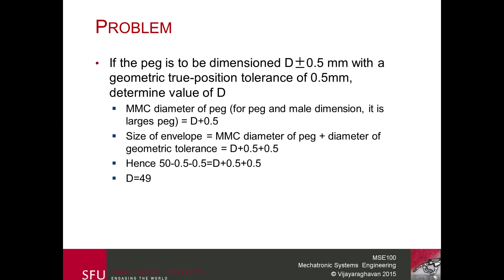This is one way to use dimensional and geometric tolerance information to size mating parts. Keep in mind that geometric tolerance is typically much finer than dimensional tolerance, so in most cases it won't significantly change dimension values. However, at high values of dimensional tolerance, the geometric tolerance starts to play a larger effect.